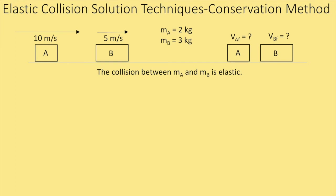Let's take a look at an elastic collision problem and I'm going to use it to show you a couple of techniques for solving it. The first technique is the standard applying conservation principles — you need to know how to do this. We have two blocks on a frictionless surface. Cart A is going 10 meters per second to the right, Cart B is going 5 meters per second to the right, and we have their masses. They collide and we're told the collision is elastic, so I know they're not stuck together. I have two unknown final velocities and I want to figure out what those are.